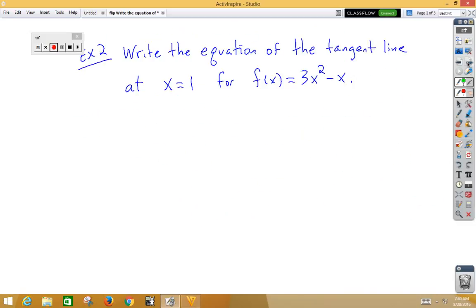In our second example, this time we're going to use a little calculus. Write the equation of the tangent line at x equals 1 for f of x equals 3x squared minus x. So the first thing we want to do is we want to get our point.